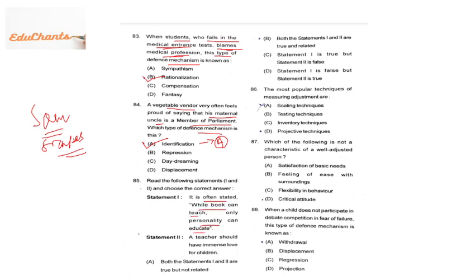Question 85: Statement 1 — books can only teach, but personality can educate (referencing figures like APJ Abdul Kalam, Swami Vivekananda, Mahatma Gandhi). Statement 2 — a teacher should have immense love for children, making students consider the teacher a role model. Both statements are correct and related. Answer is B. Question 86: the most popular technique for measuring adjustment is projective techniques — not scaling, not tests, not inventory.